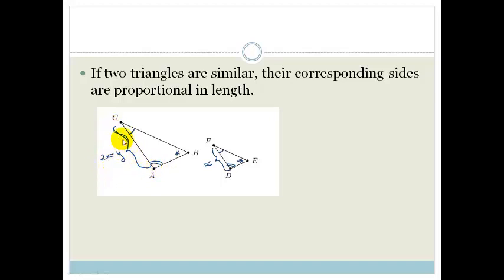Then if I told you that this was Z, that the length of FE was Z, then we would know the length of CB, because it's the same corresponding side to that, would be 2Z.